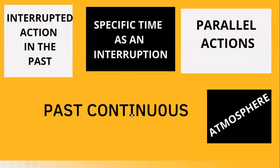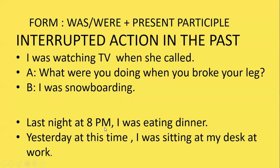Now, past continuous. You use past continuous to talk about an interrupted action in the past, to talk about a specific time as an interruption, to discuss parallel actions, and to create an atmosphere. The sentence structure for past continuous is: was/were plus present participle.